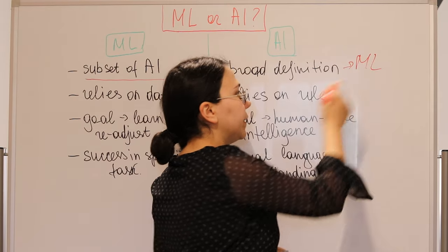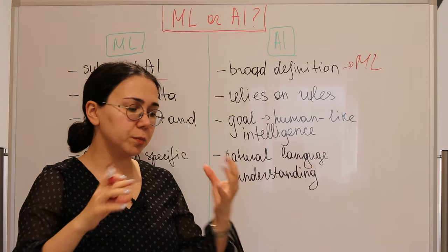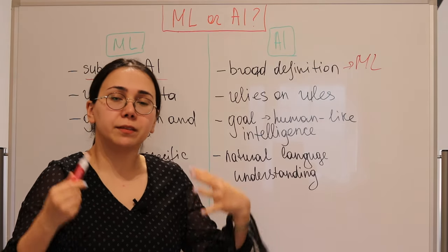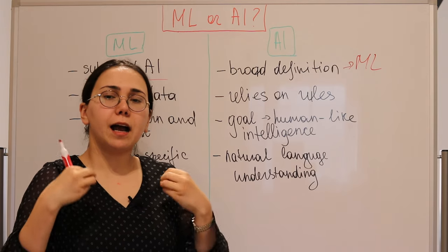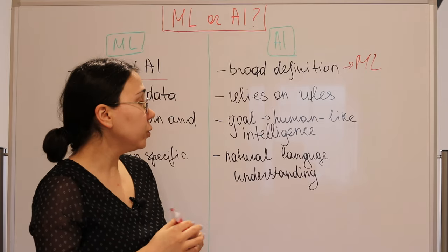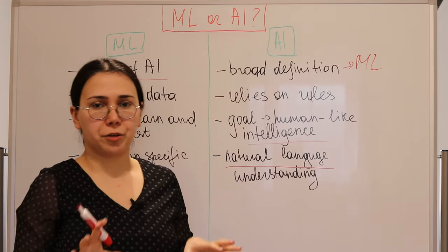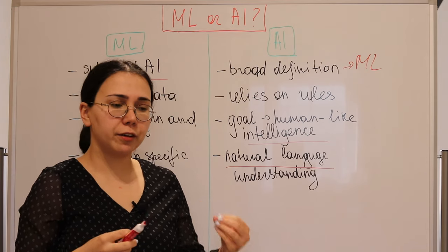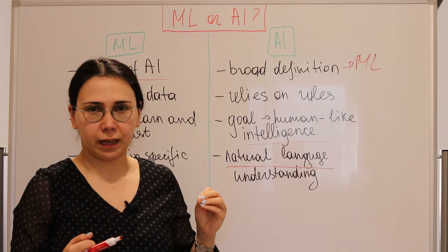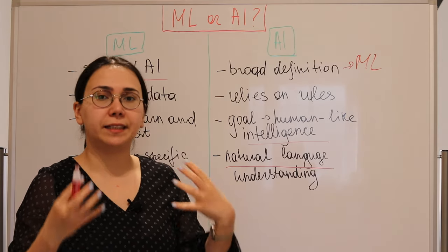AI includes machine learning as a subset, but AI is a much bigger definition. It includes machine learning, human intelligence, and understanding of natural language. The ultimate goal of AI is to be as intelligent as humans — or more intelligent. This means it can have human-like intelligence and understand natural language, including the subtle complexities of how words come together in each language.